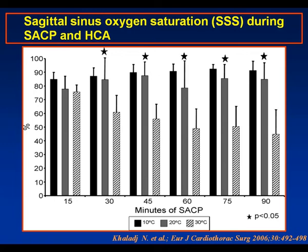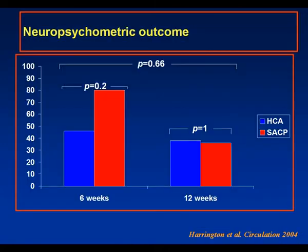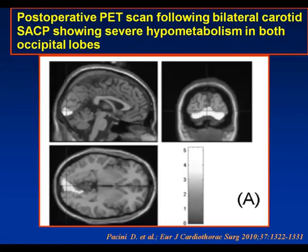There is ongoing debate regarding SACP corporeal arrest temperature and the temperature of the perfusate, which is yet to be resolved. Experimental data tends to favor a lower temperature outcome. There is still a similar neuropsychometric deficit in patients 12 weeks after surgery, which does not appear to be abrogated by SACP. Data from the Bologna group using PET and MRI scanning in patients undergoing SACP has shown a disturbing incidence of occipital lobe hypoperfusion or hypometabolism following bilateral carotid SACP.